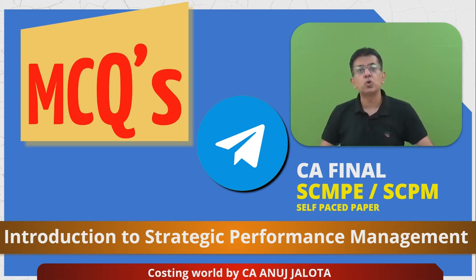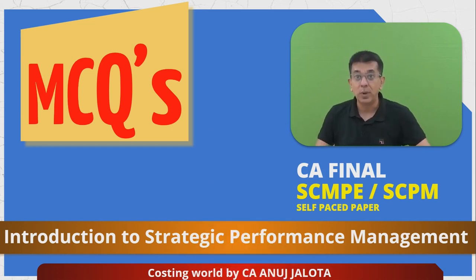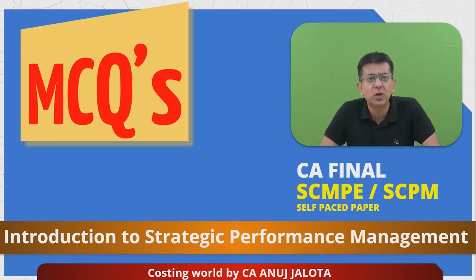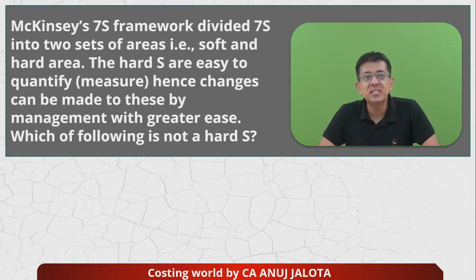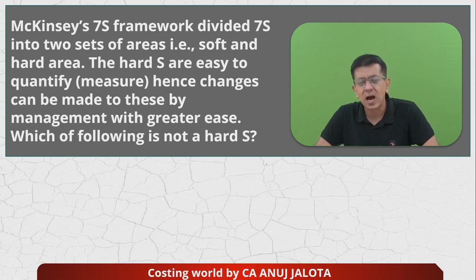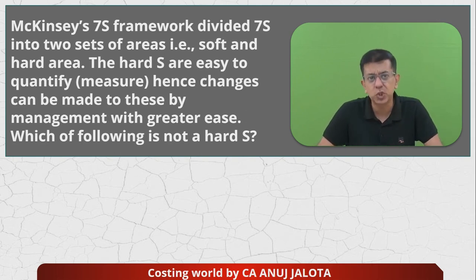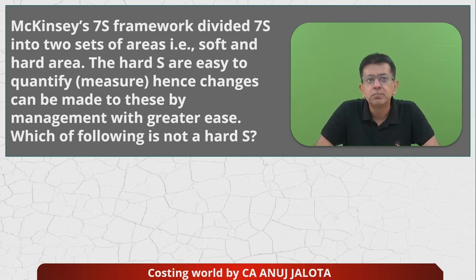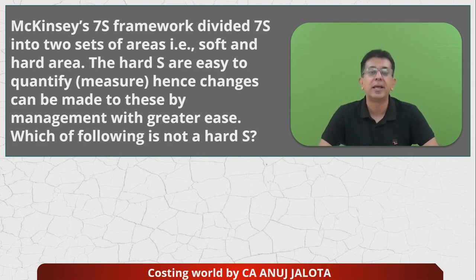So let's see what question we have today. The question is: McKinsey 7S framework divides the 7S into two sets of areas — soft and hard. The hard S are easy to quantify, that is measure, and hence changes can be easily made to them by management with greater ease. Which of the following is not a hard S?